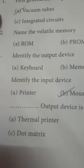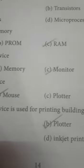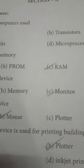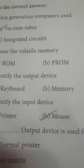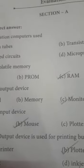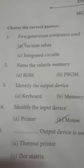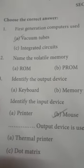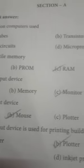Second question: name the volatile memory. The RAM is the volatile memory. Once you remove power, you will lose data from its RAM — the data is lost. So the value of the volatile memory is RAM.